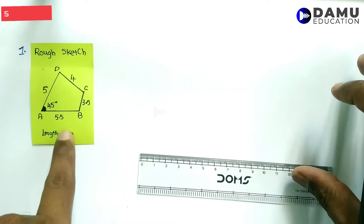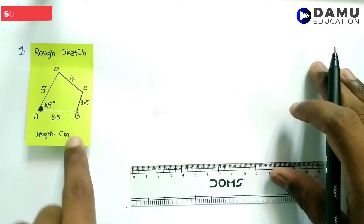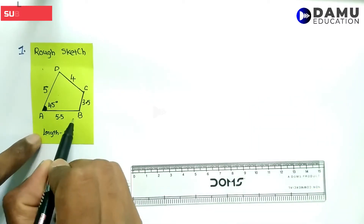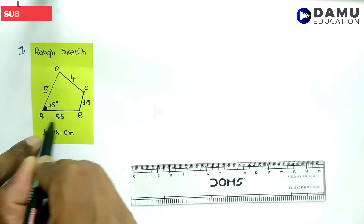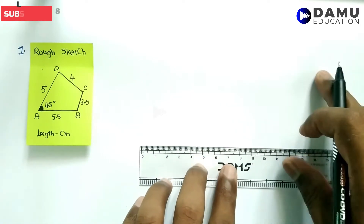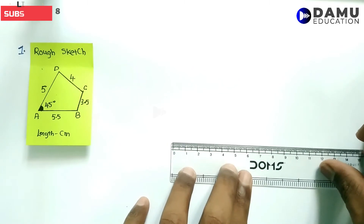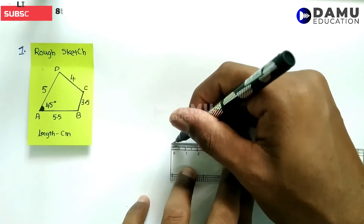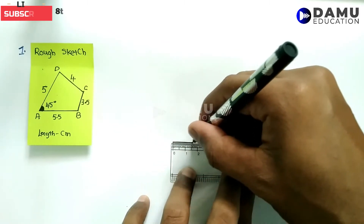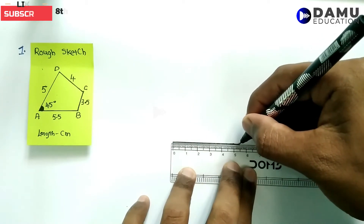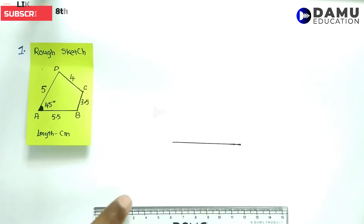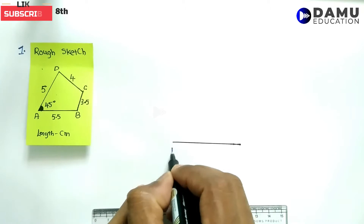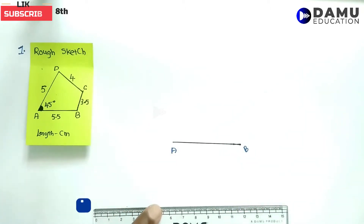A quadrilateral has four sides and we need to construct it. First we need to draw AB and AD. Since AB at 5.5 centimeters is greater than AD at 5 centimeters, we draw AB first. Keep the scale horizontally and draw 5.5 centimeters using a ruler from zero, so this line AB equals 5.5 centimeters.